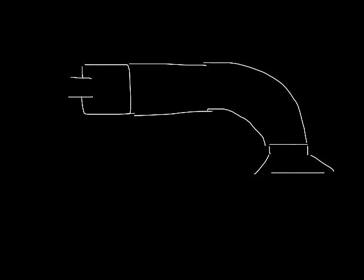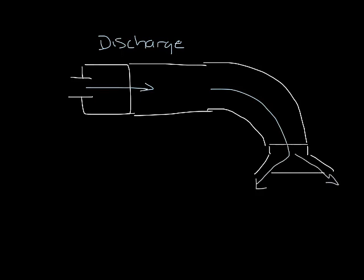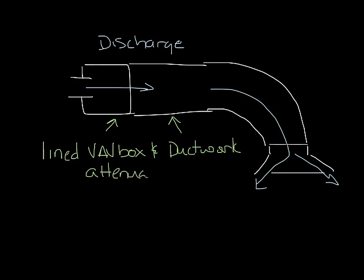So now let's look at discharge sound. Let's draw our single duct box again, and duct it out to a diffuser. Discharge air flows through the box, down the duct work, and then out the diffuser into the space. Duct work is usually lined, and lined duct work is an excellent attenuator of discharge sound from the box. The diffuser is usually a flex duct, which is also an excellent attenuator of VAV box sound coming down the duct work. It can reduce the mid frequencies by 20 dB or more.